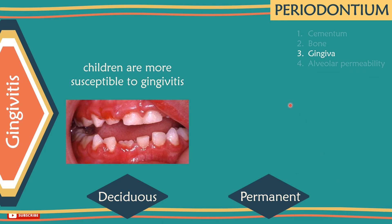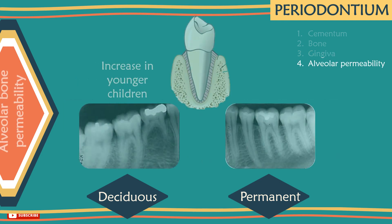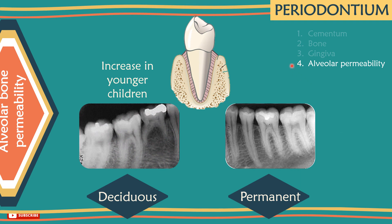Number 3 – Gingiva: both adults and children can get periodontal diseases. However, children are more susceptible to gingivitis, the mildest form of the disease. More advanced types of periodontal disease such as periodontitis are not common in children and are more common in adults. Number 4 – Alveolar permeability: it is increased in younger children. Thus, it is usually possible to achieve local anaesthesia of primary mandibular molars by infiltration alone up to 6 years of age. Older than that, when the bone gets denser, you need an inferior alveolar nerve block.